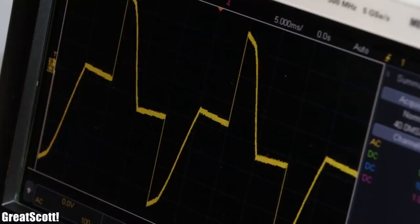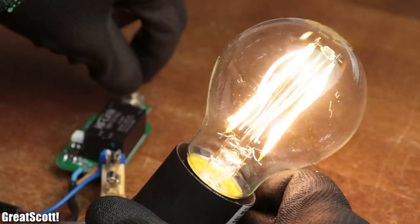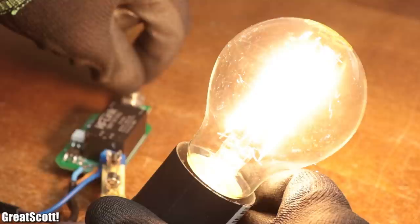Even dimming the LED light bulb from my friend was partly possible with a bit of flicker. Other LED light bulbs however dim perfectly fine with my DIY dimmer, while others did not work at all.